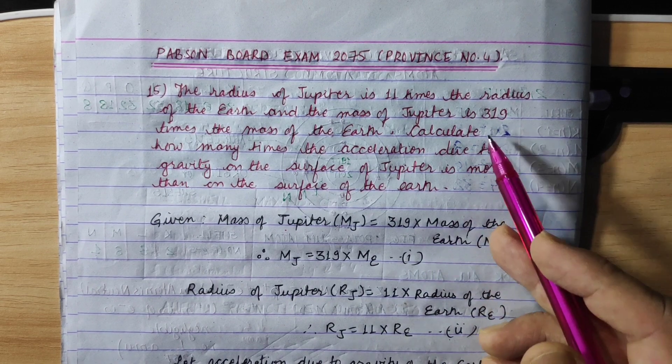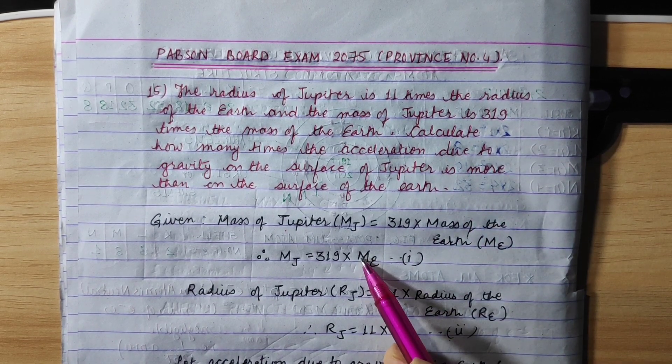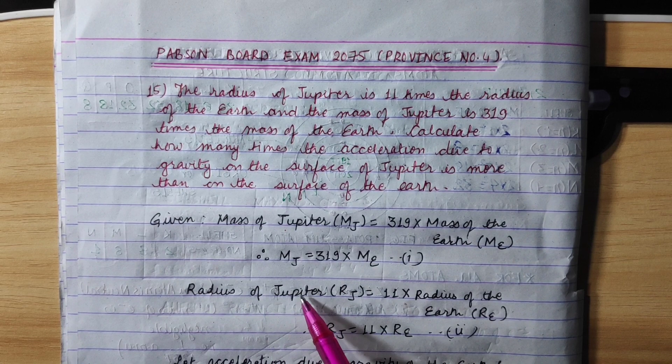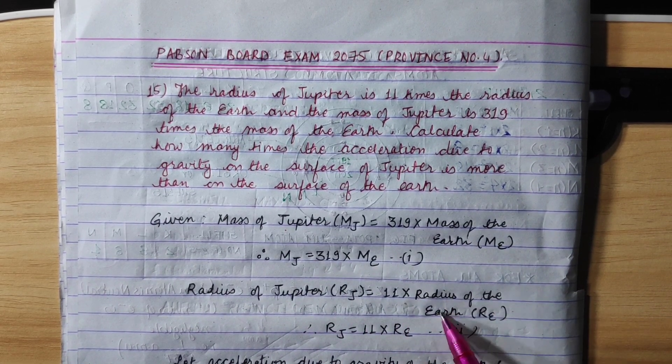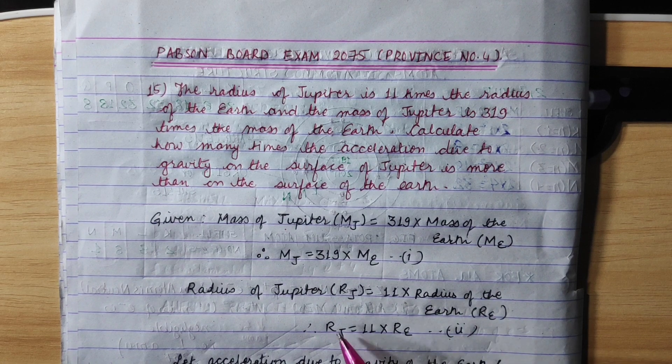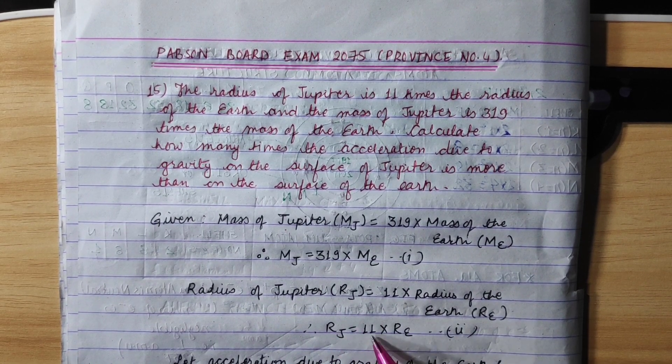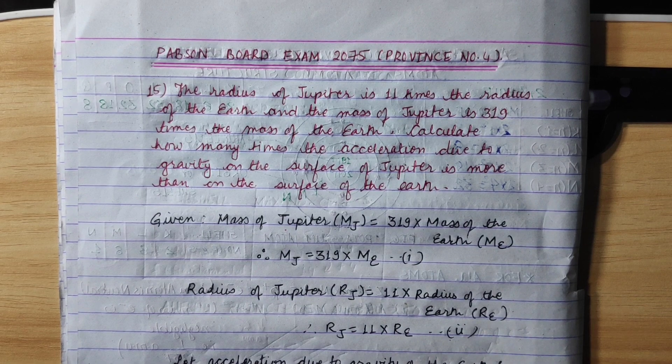The radius of Jupiter is 11 times the radius of the Earth. So Rj equals 11 times Re.